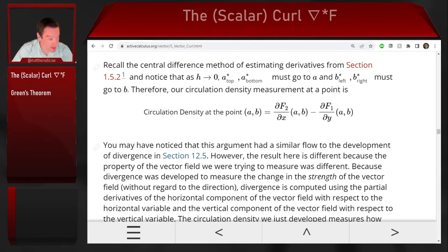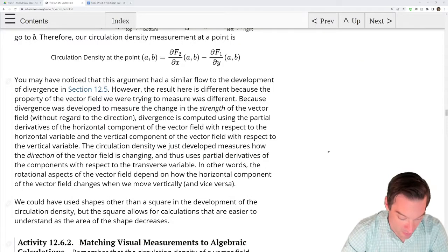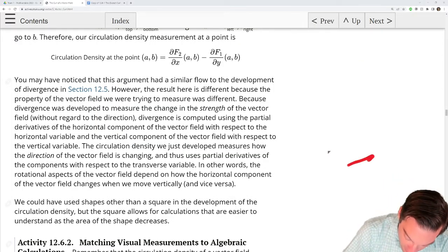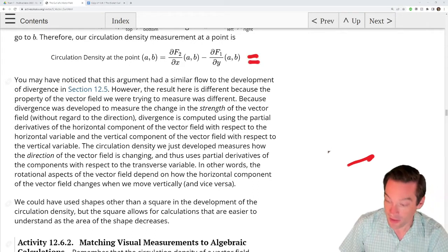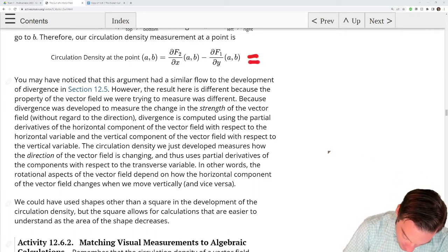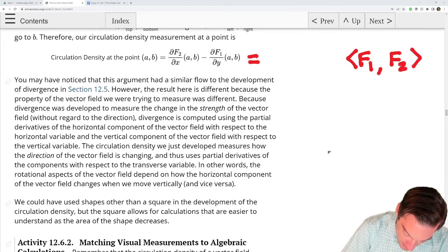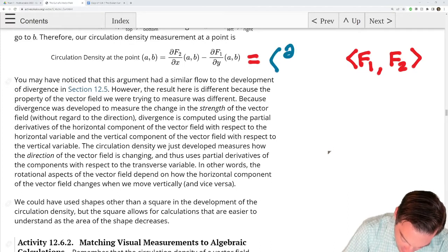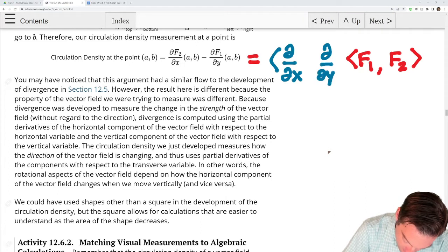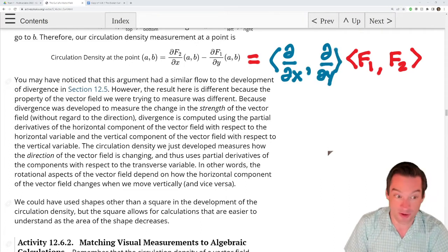In other words, a way of thinking about this quantity, and the reason that I don't call it circulation density, I call it scalar curl for the following reason. Really what I have here is my vector field, which has the components f1 comma f2. And what I'm really doing secretly, or perhaps not so secretly, is I'm taking a differential operator: the partial with respect to x, the partial with respect to y.